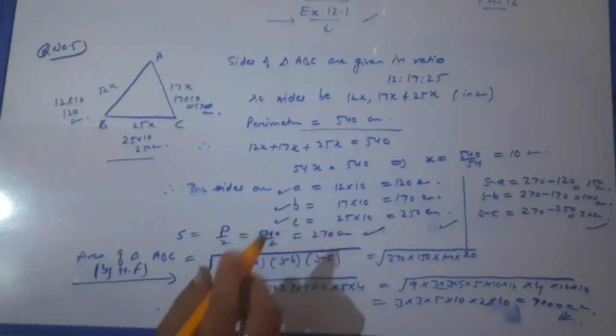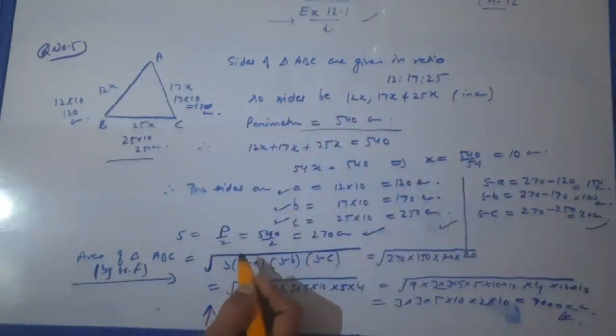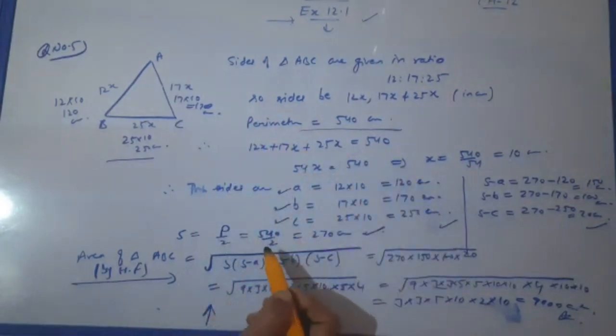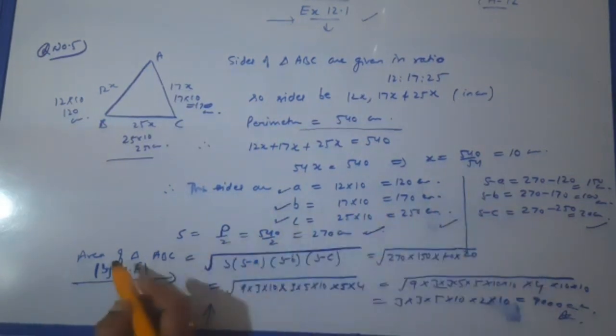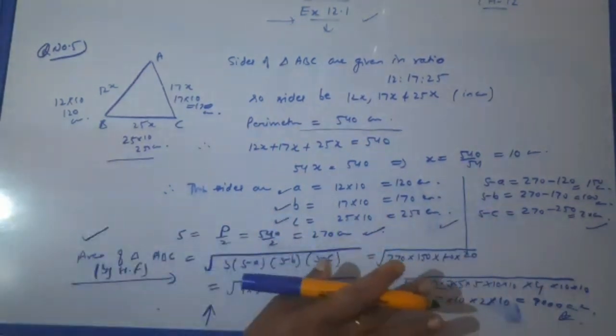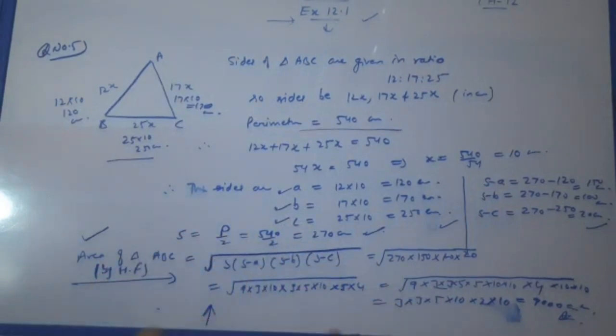So nothing was difficult. One concept you had to understand here is that you were given in ratio. You have to take a constant. Then you have to find out the value of that constant. And then you can easily get all the sides of that triangle. Then you have to find out S minus A, S minus B, S minus C for the Heron's formula. Put all the values in the Heron's formula and you will get the area of the triangle.